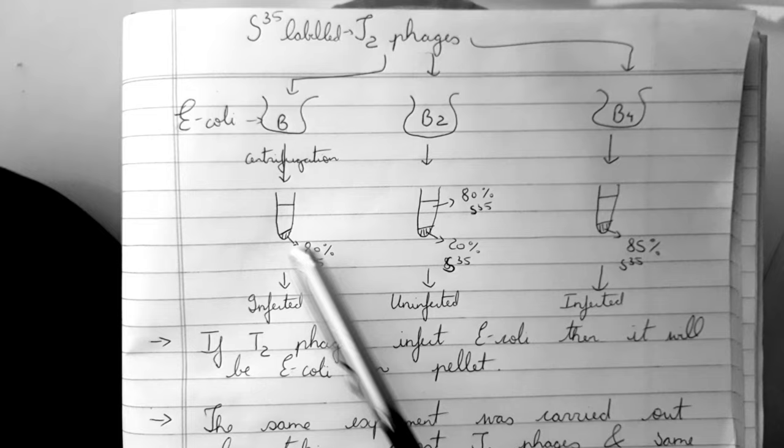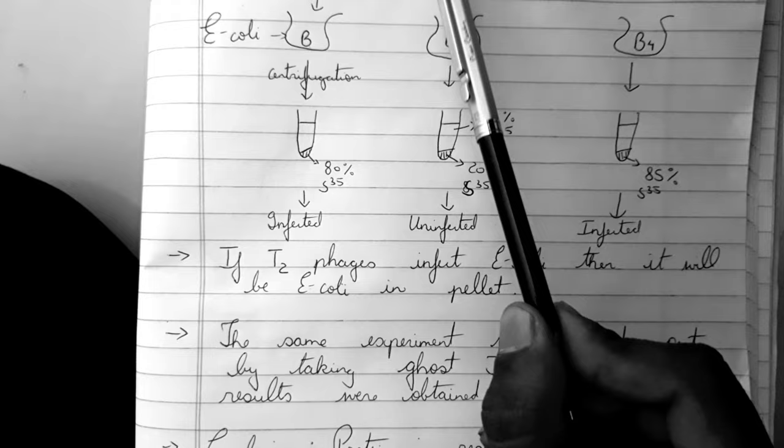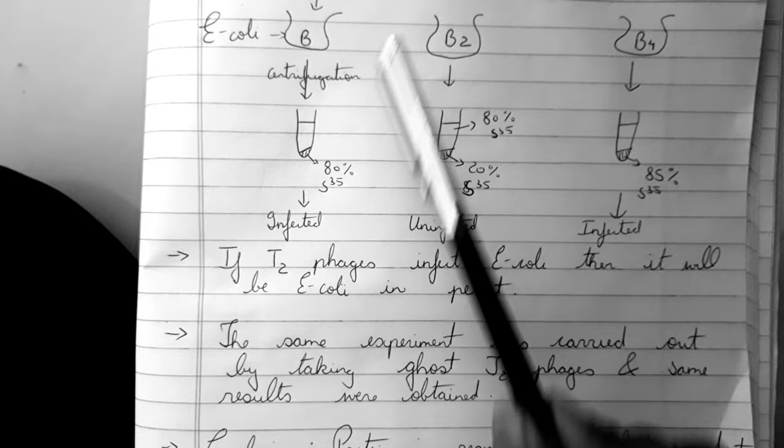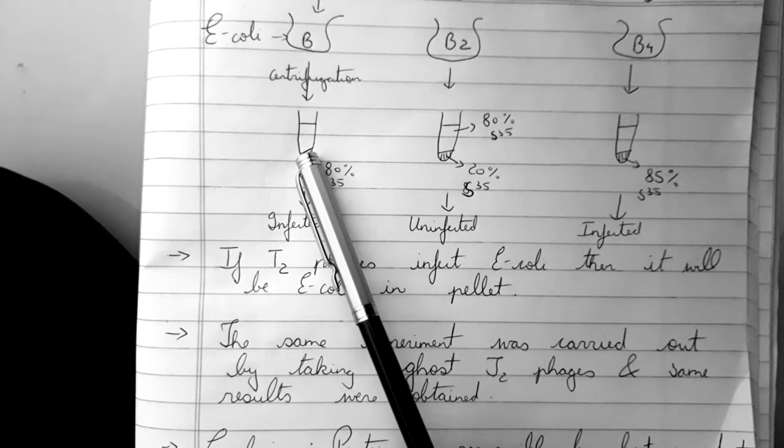Now what happens is after incubation he centrifuged it and got supernatant and pellet. Now what happens is if the T2 phages had infected the E. coli, the E. coli is heavier cells so they remain in pellet. So if T2 phages infect the E. coli the S35 activity would be in pellet.